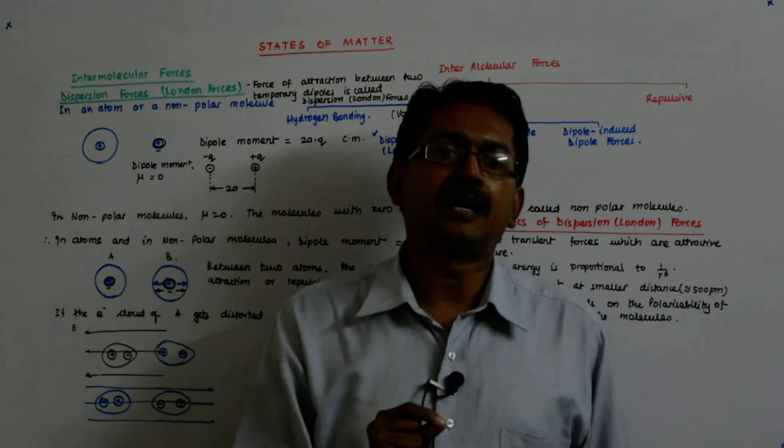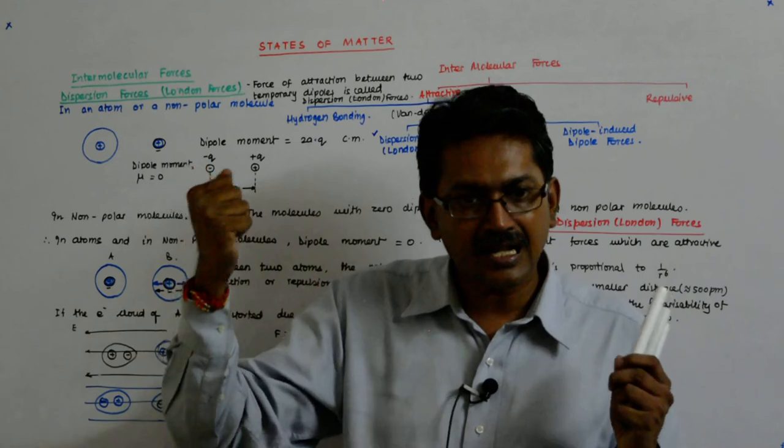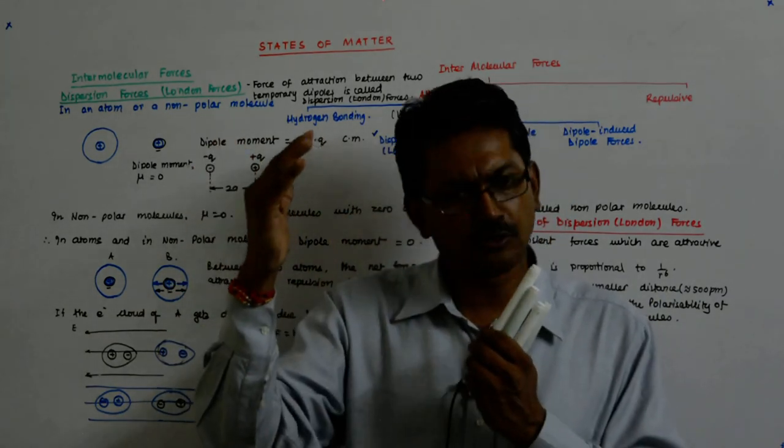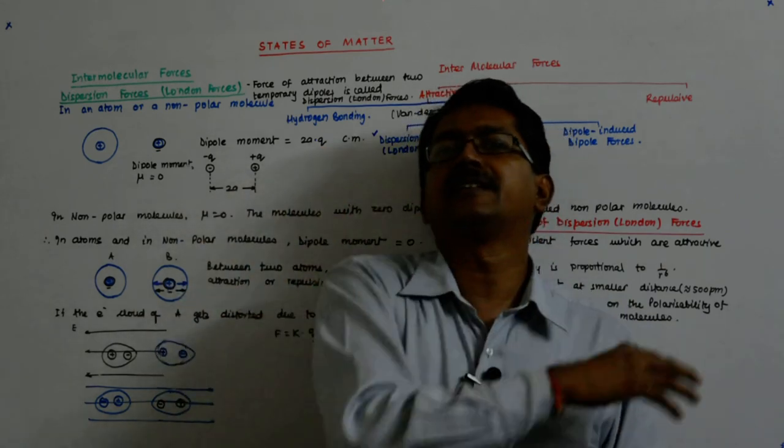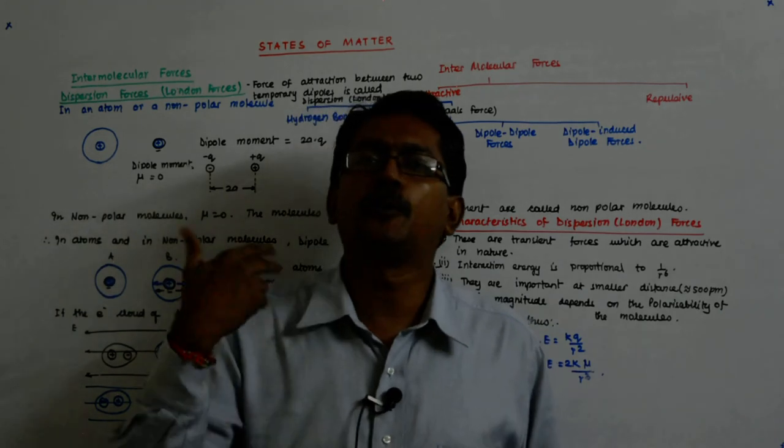And when I am talking about a larger molecule, since the electron distances are large, the influence of the nucleus on the outermost electrons is less. So, their tendency to get distorted becomes more. So, they are more polarizable.